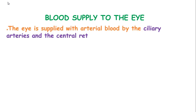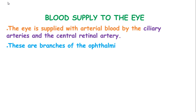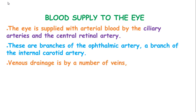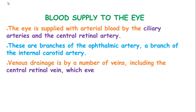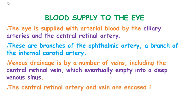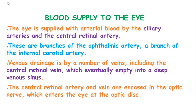The eye is supplied with arterial blood by the ciliary arteries and the central retinal artery. These are branches of the ophthalmic artery, which is a branch of the internal carotid artery. Venous drainage is by a number of veins including the central retinal vein, which eventually empties into the deep venous sinus. The central retinal artery and vein are encased in the optic nerve, which enters the eye at the optic disc.